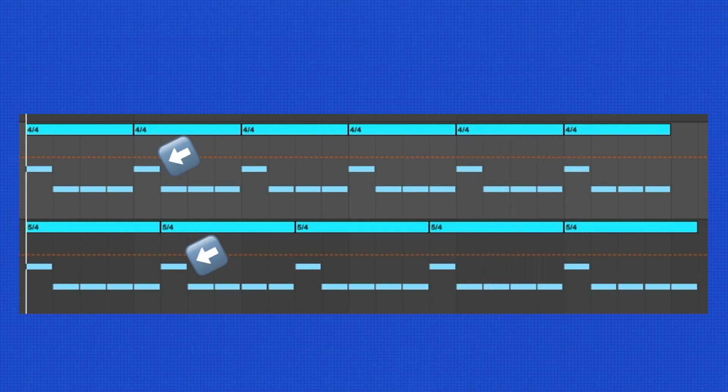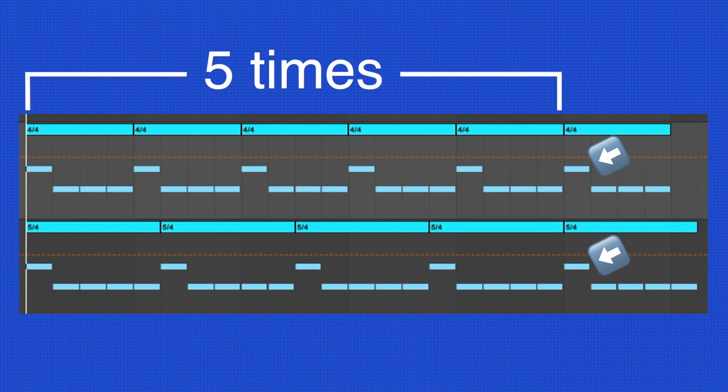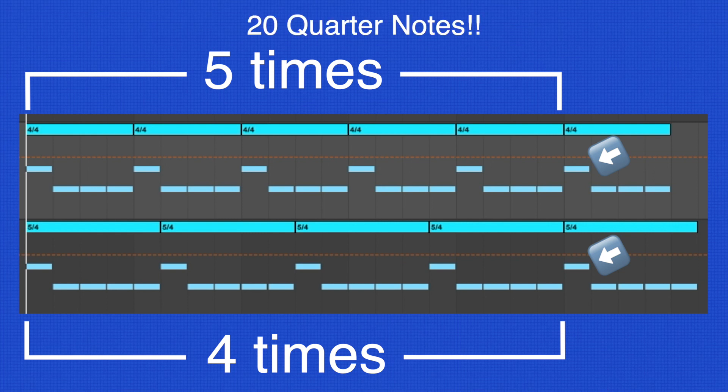As we can hear, the first note, which is the hi-hat, of the two patterns don't line up after each pattern is played once. That extra quarter note in 5-4 desynchronizes the two patterns. They do eventually line up after the 4-4 pattern is played five times, and the 5-4 pattern is played four times. Or quarter note in each pattern is played 20 times. 5 times 4 is where we get that number.